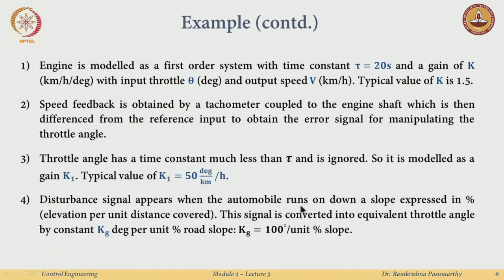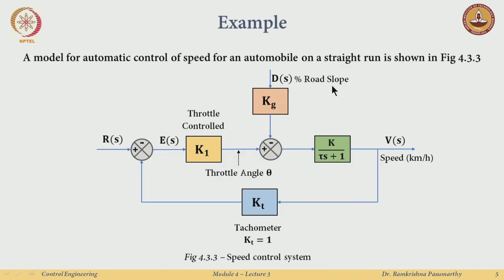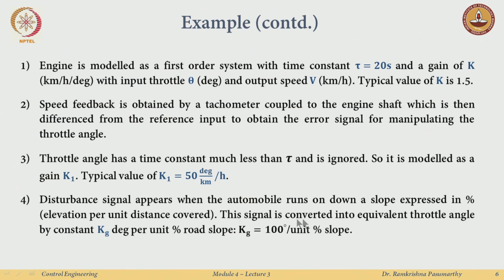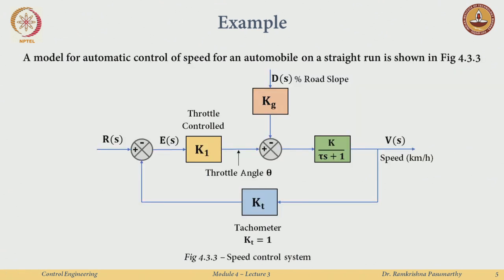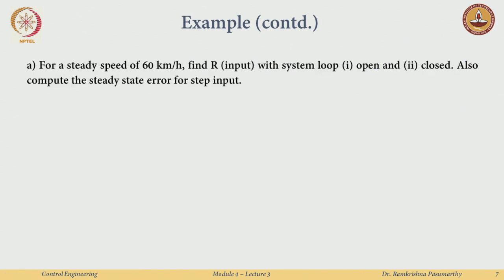The disturbance signal appears when the automobile runs on an up or down slope, expressed as a percentage of road slope — 90 degrees would mean hitting a wall and going vertically upward. This signal is converted into an equivalent throttle angle via a gain kg equal to 100 degrees per unit percentage of slope. We will now compare what happens with no feedback versus with feedback.